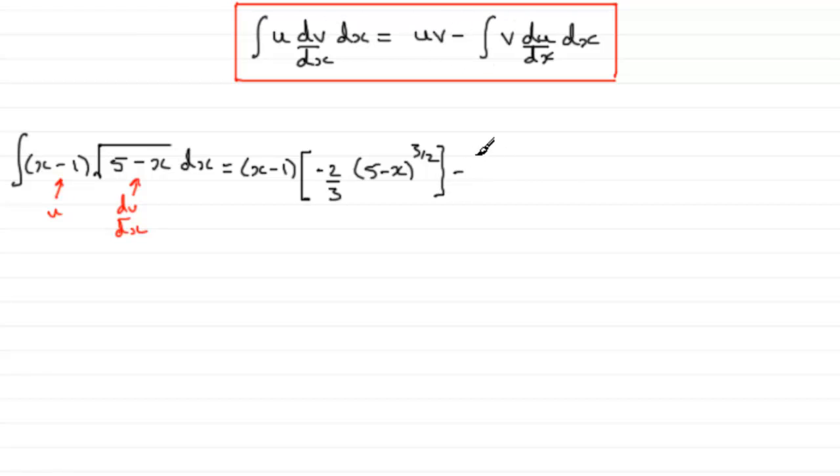Now we've got minus the integral of the integral of the part we just integrated, which was this bit here. So just write that in as minus 2 thirds, 5 minus x to the power 3 over 2. And then we have to multiply it by the differential of the other part, the u part here. And if you differentiate x minus 1 with respect to x, you just get 1. And then we've got to put the dx on the end. We're integrating with respect to x.